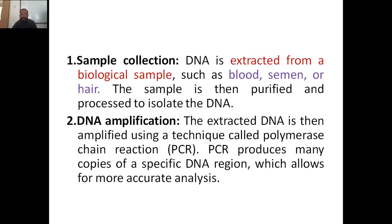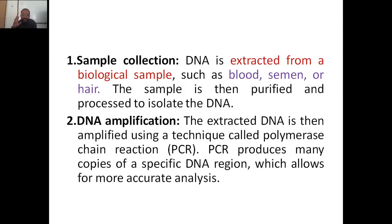After collecting the sample, we need to amplify it. Why? Because whatever we get in a crime scene, the sample will be very small and we need a large quantity. So we make a number of copies using a technique called PCR — polymerase chain reaction. In PCR, if you are given one particular strand, it will amplify it to thousands of strands so that you can do a lot of tests.